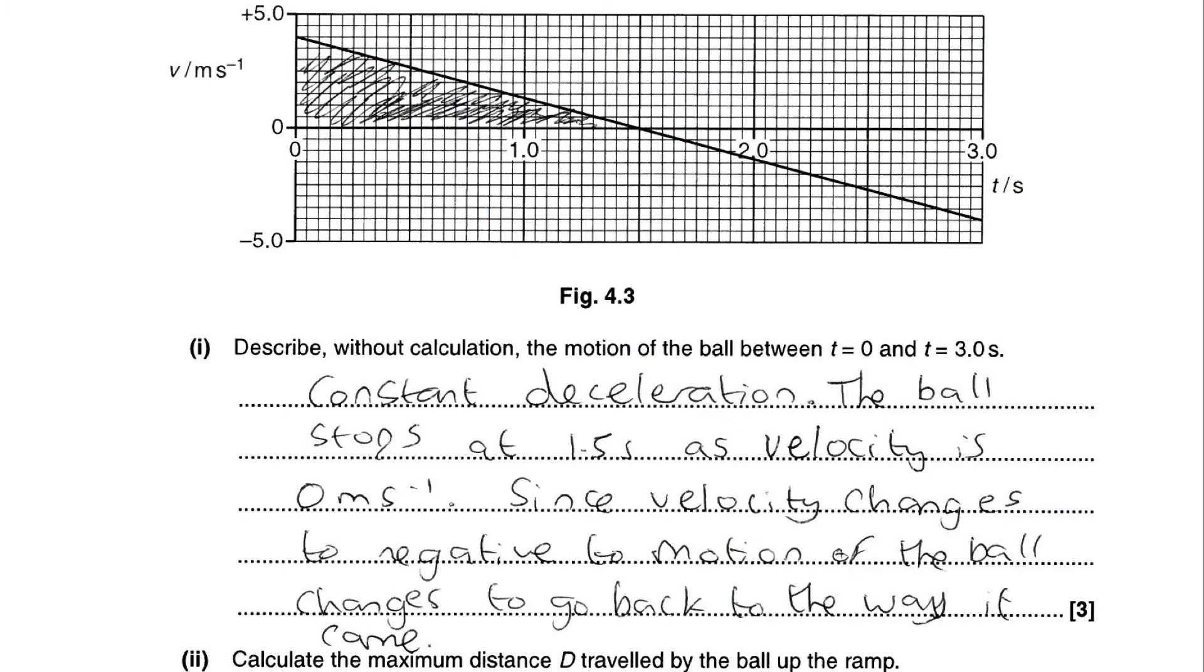Okay, so this is question 4C part 1. Describe without calculation the motion of the ball between t equals 0 and t equals 3 seconds. So as we can see from the graph, we can see a constant deceleration due to the straight line going down. We can also see that it stops after 1.5 seconds, which is where the velocity is 0 meters per second, and it will be the highest point of where the ball can reach. Since the velocity is now negative, the ball is starting to roll back down the hill and going back the way it came.